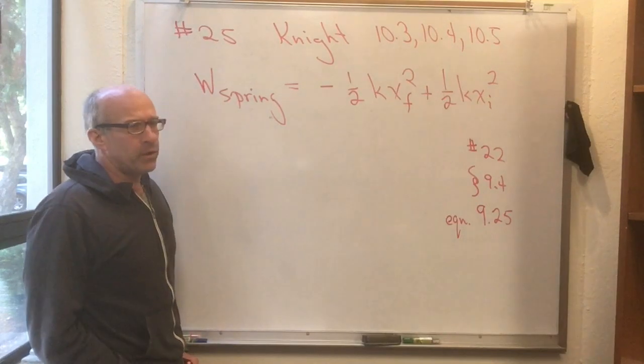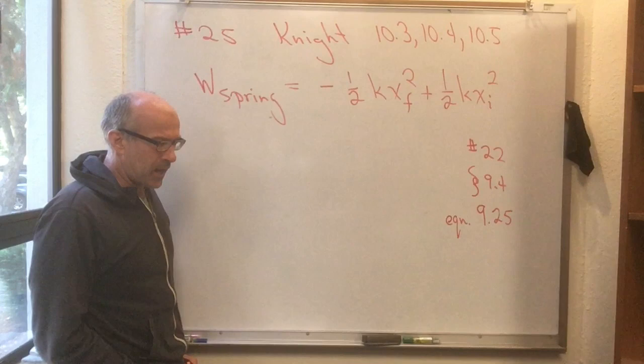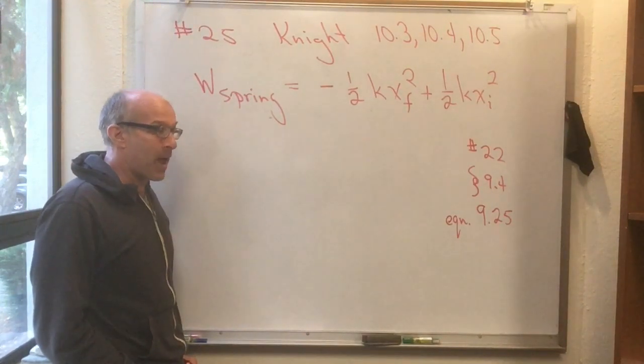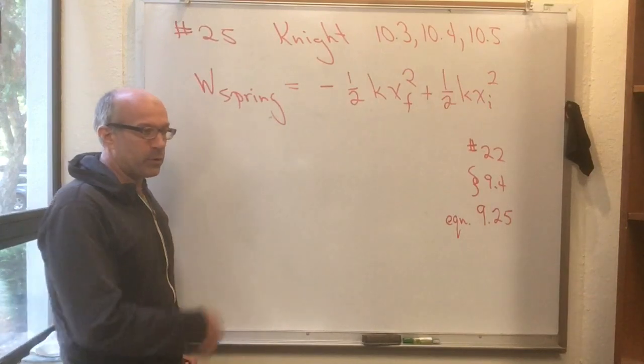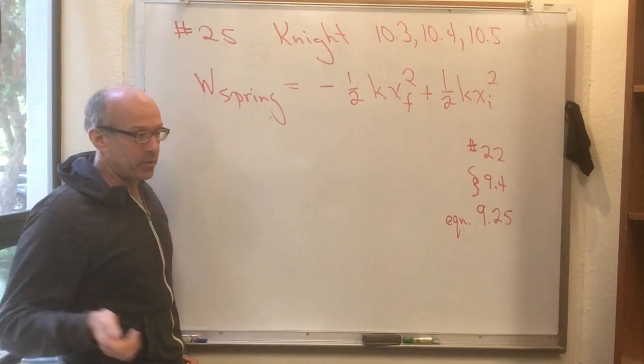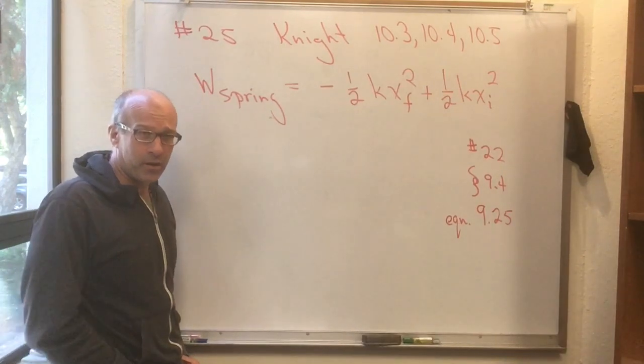And then 10-4 and 10-5 are basically kind of fleshing out the same discussions that we've been doing in class where my analogy has been bank balances. That energy is conserved. And when you withdraw it from one account, it gets added to another account. And our main accounts here right now are kinetic energy and potential energy.